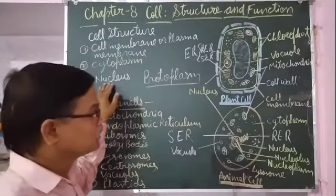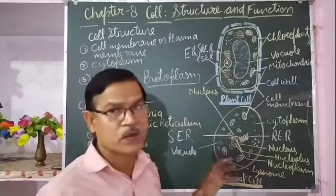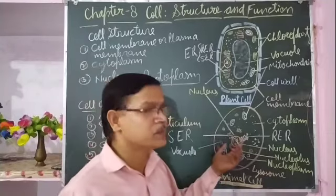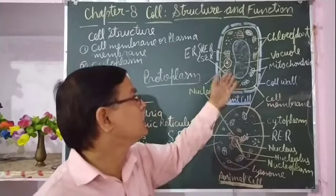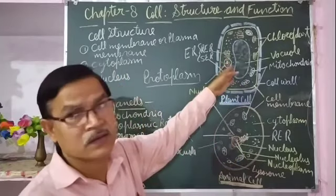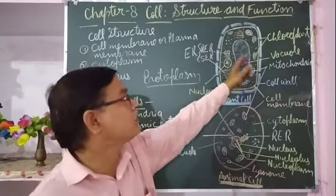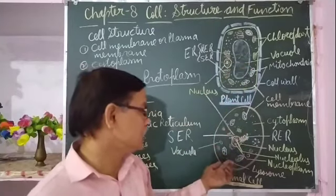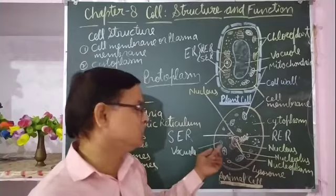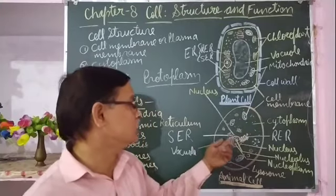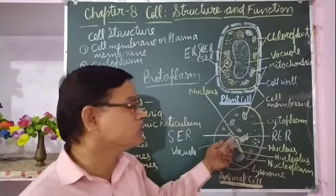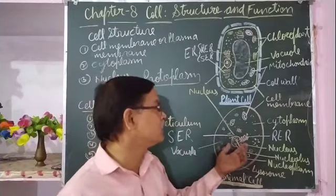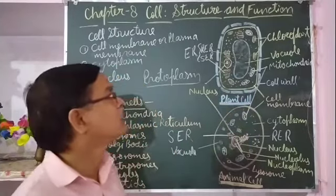If you talk about the nucleus, it is generally oval or spherical in shape. In animal cell it is present at the centre of the cell. In plant cell it is present a little inside because of the presence of a large vacuole. In animal cell, vacuoles are present but they are very small. So mostly the nucleus is found at the centre in animal cell, but in plant cell it is found at the margin.